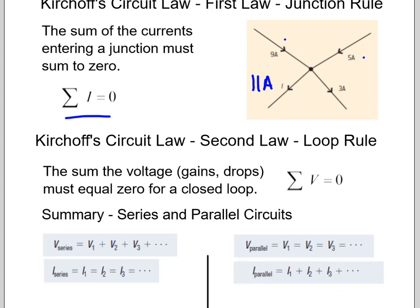The voltage one is called the second law or the loop rule. It means the sum of all our drops and gains. So drops are going down, gains are going up, must equal zero for a closed loop. And this is a little trickier. We'll keep it relatively simple but I'll show you one or two tricky ones down the road. Here is the summary for series, here is the summary for parallel. And again once you see this in action it makes way more sense.